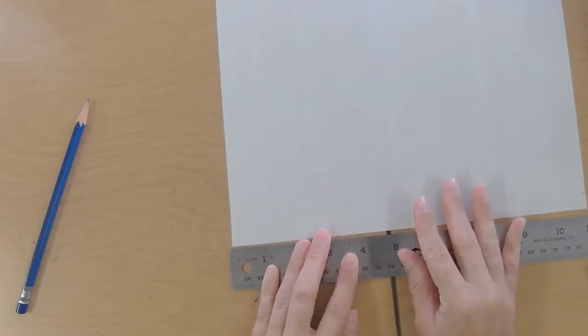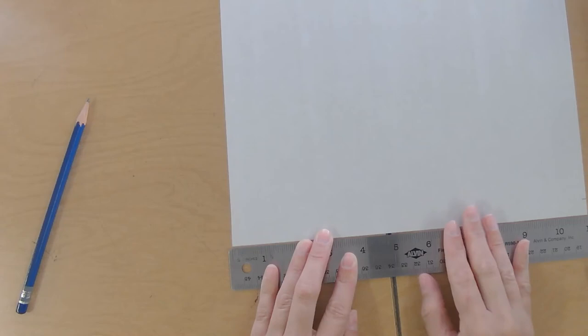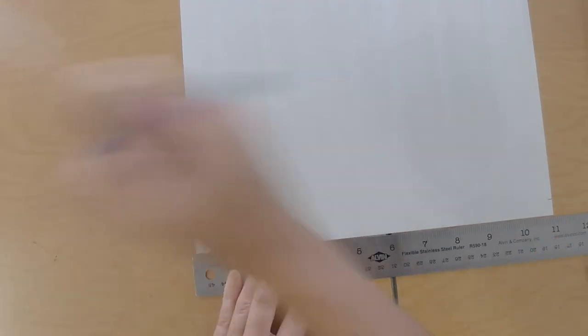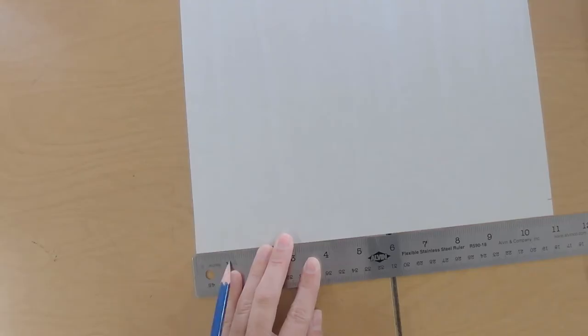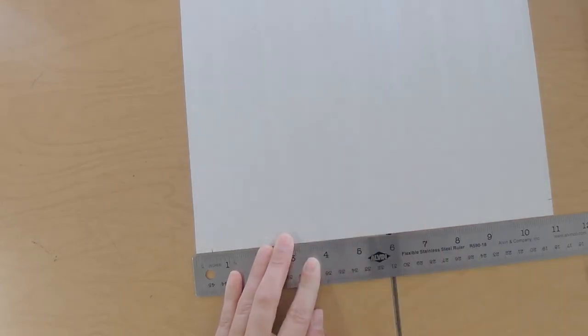So I'm lining up the end of my paper with that zero mark. And your paper is 11 by 14. So the other end of the paper should fit nicely on the 11 line. Again, this is one inch. We want a half inch border. And the half inch is this longer line right here. Okay.